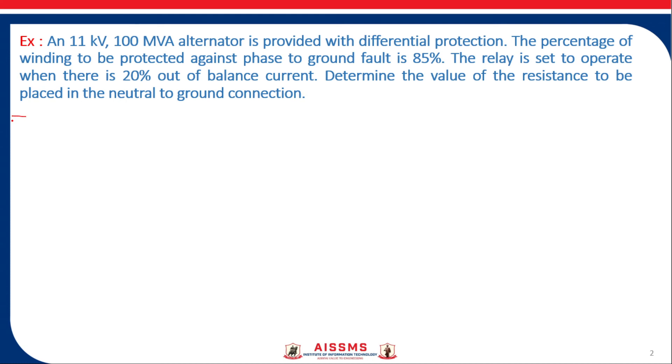Now let us see the given data. In this numerical they give voltage of alternator, so VL is 11 kV, equal to 11,000 volts. Then they give power of the alternator, 100 MVA, which is 100 into 10 raise to 6 volt ampere. Then they give percentage of winding to be protected, which is 85%.